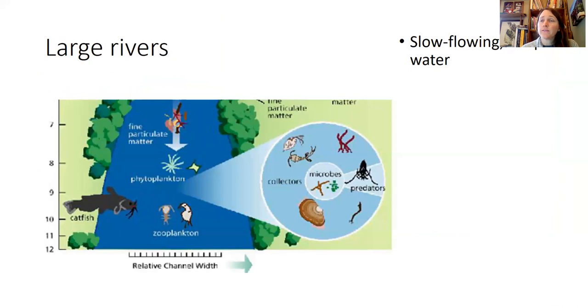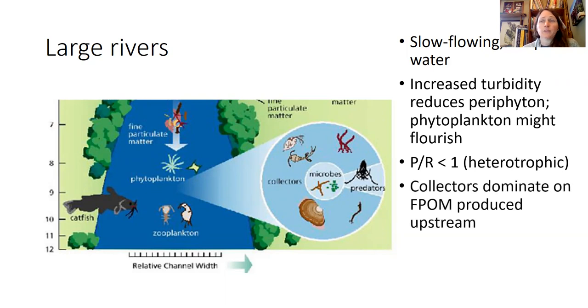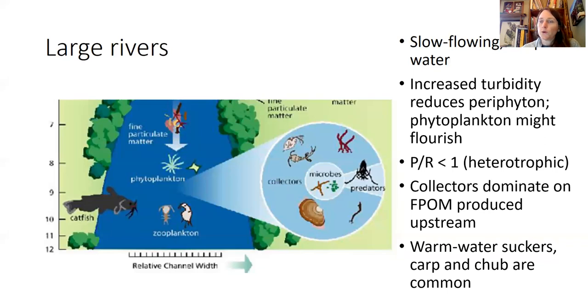In the large rivers, you have slow flowing water, increased turbidity, which reduces periphyton growth, although you might have some phytoplankton that start to grow. Because the water is so deep, your productivity to respiration ratio goes heterotrophic, so less than one. Collectors dominate fine particulate organic matter that's produced upstream. That's almost all that you have, but you still have about 15 percent predators. The fish transition to warm water suckers like carp, chub, and catfish. This is the only place in the river where you might have a significant amount of phytoplankton and zooplankton.